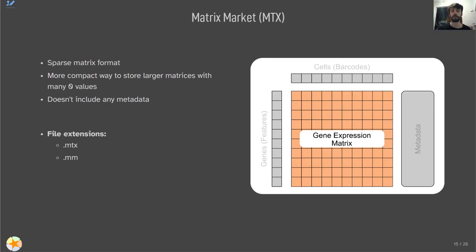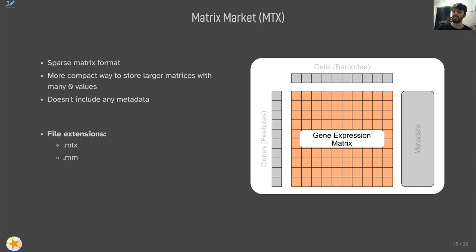Our next simple format is the Matrix Market format, commonly referred to as .mtx. This specifically just stores the gene expression matrix, and can store it as either a full or sparse matrix. This format does not include any metadata, so you will commonly see this file alongside two individual files — typically called features and barcodes for the gene and cell metadata. The common file extensions are .mtx or .mm. Usually when looking at public data you'll find those two other files as well, because the expression matrix on its own isn't very useful.